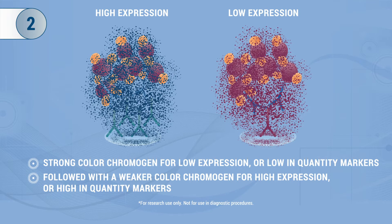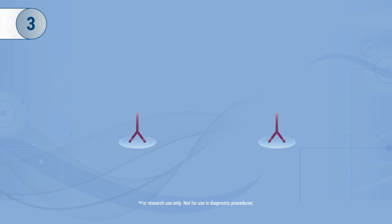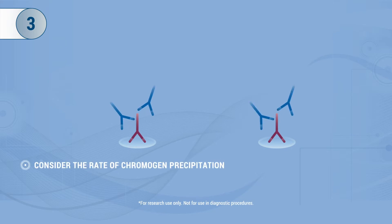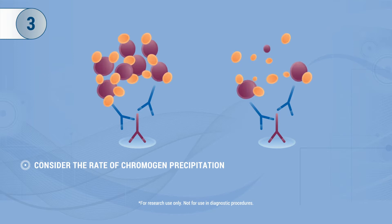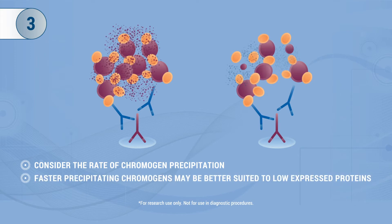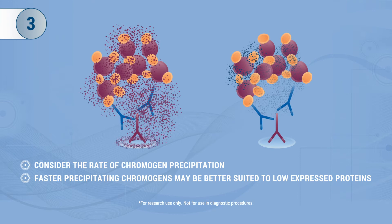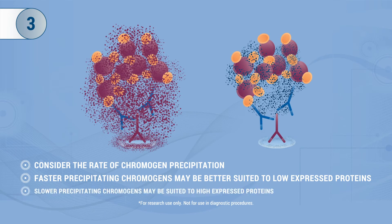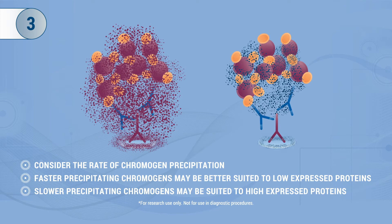This could also be applied if you expect the quantity of one cell type to exceed that of another. Tip 3: For high and low expressed proteins, the rate of chromogen precipitation is another point for consideration, as some chromogens convert at different rates. Faster precipitating chromogens may be better suited to low expressed proteins, as they create lots of precipitate and a strong signal. For high expressed proteins, using slow precipitating chromogens may prevent overwhelming the signal of other markers.